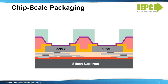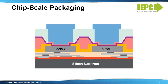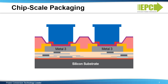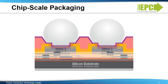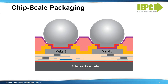Next, photoresist is used to define where the solder will be plated, and then copper and solder are plated in that opening. The photoresist is removed, the underbump metal is etched, and the solderable metal is reflowed to form the solder balls.